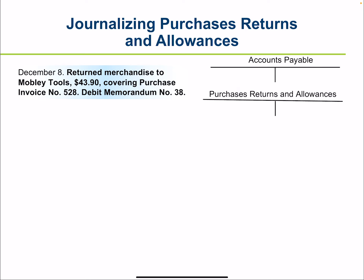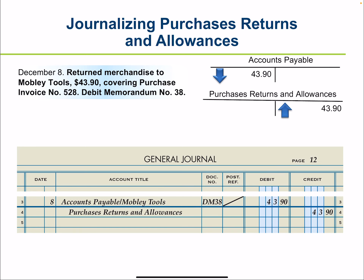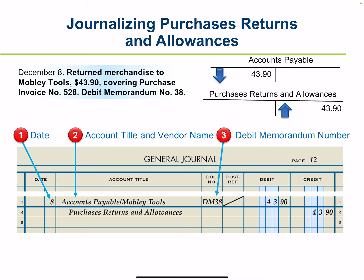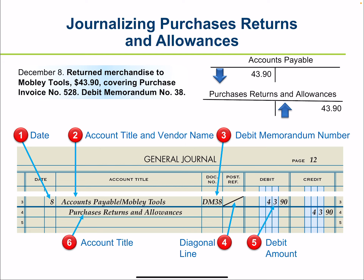Accounts payable and purchase return and allowance accounts are both affected. Accounts payable — the amount you will pay your vendor — decreases because you returned some merchandise. Purchase return and allowance increases by the total amount returned. To record this in the journal: write the date, write accounts payable with the vendor name separated by a diagonal line, write the debit memorandum number, draw a diagonal line in the post reference, write the debit amount, then the account title and credit amount for purchase return and allowance.